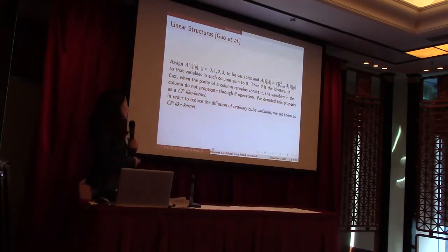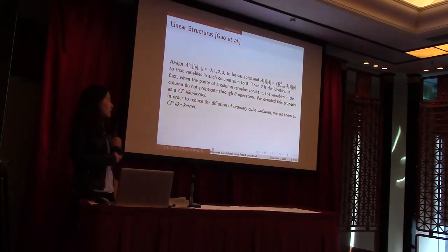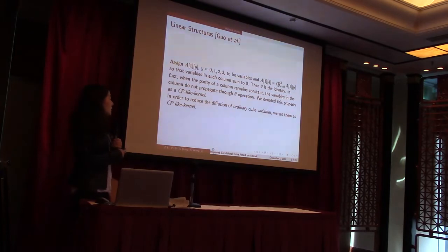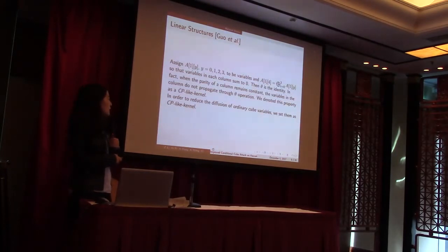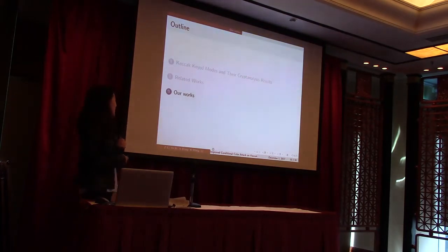Linear structures means that if the first four bits in a column have variables in it, then the last one is the sum of the first four bits. The theta operation will be an identity. If they control the sum of five bits in a column to be constant, then the theta operation will not diffuse the variables in it. They notice this property as sticky-like kernel. To reduce the diffusion of ordinary cube variables, we set them as sticky-like kernel. Then I will introduce our works.